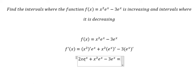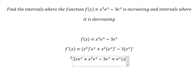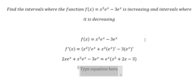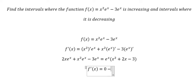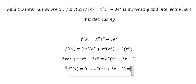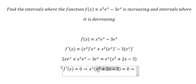Next, we do factorization by factoring out e to the power of x. Then we set the first derivative of the function equal to zero, which means this expression equals zero, and now we can find the critical points.